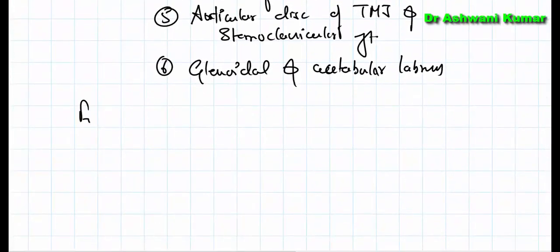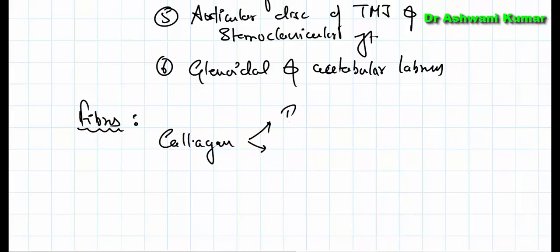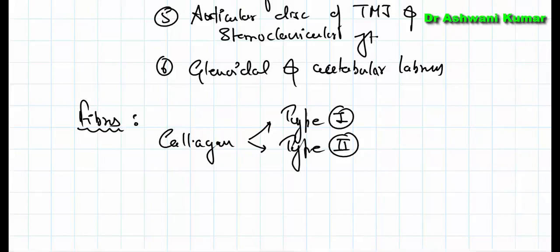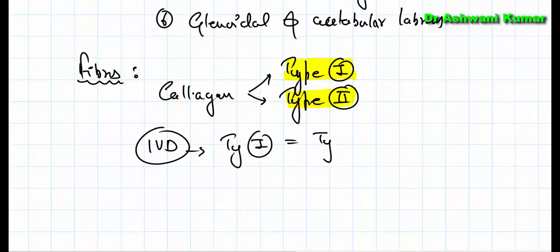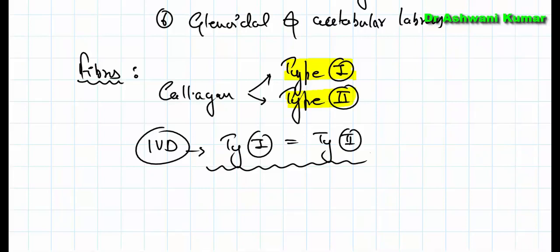Coming to the fibers of fibrocartilage: we have thick collagen fibers, and the types present are type 1 as well as type 2 collagen fibers. The proportion of type 1 and type 2 varies with different types of fibrocartilage. In the annulus fibrosus of the intervertebral disc, type 1 and type 2 collagen fibers are present in equal proportion.